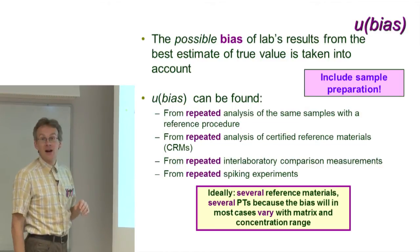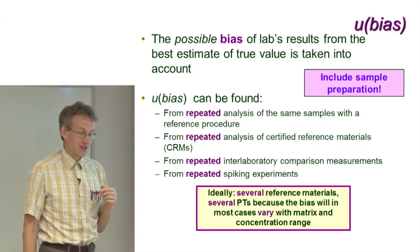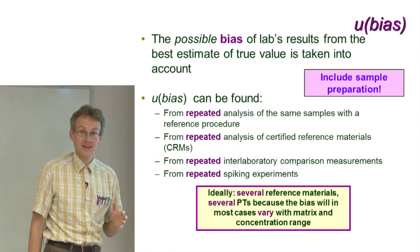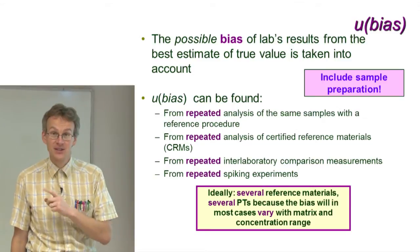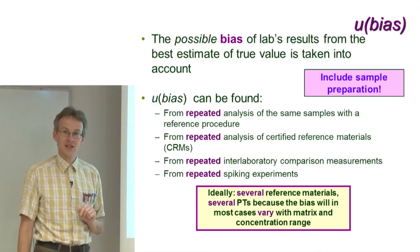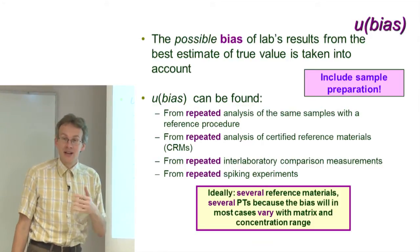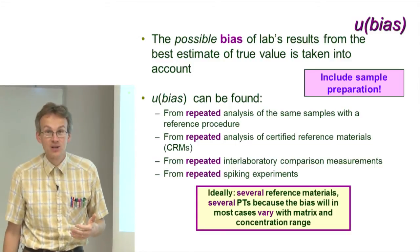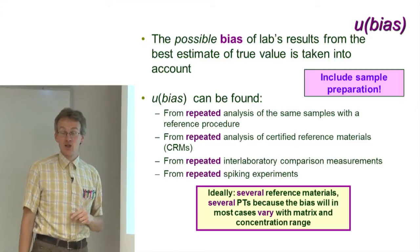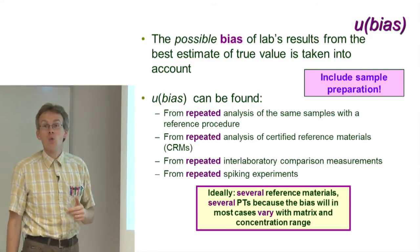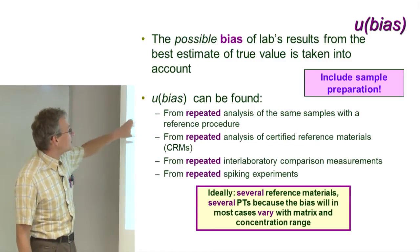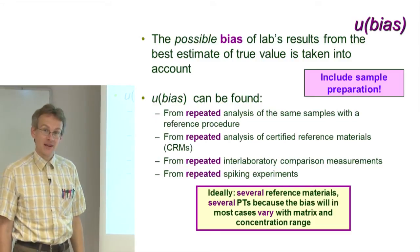Now, if we were looking at the random component, the U-RW component, I did not specify anything about the sample — the sample there could be just any sample. Here it's different. For finding bias we certainly need a reference value. We've seen in an earlier lecture that bias is a numerical estimate of trueness, and whenever we speak about trueness we always need a reference value, meaning for bias determination we need samples or materials where we know, at least from some information, how much of the analyte is inside. In broad terms there are four different possibilities for how bias can be found.